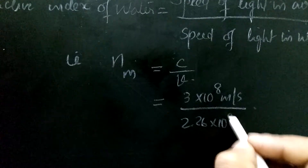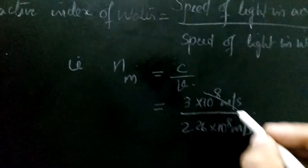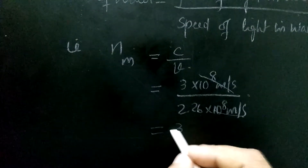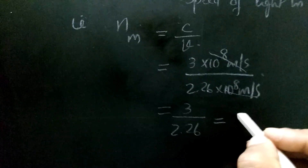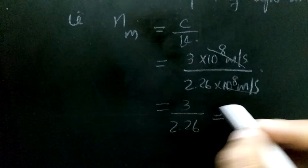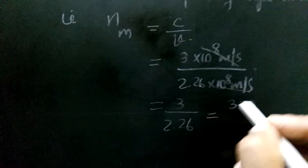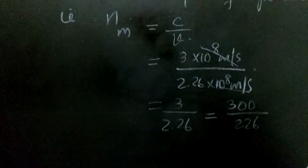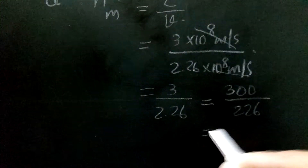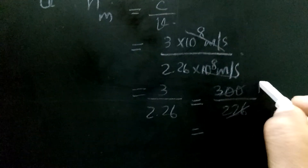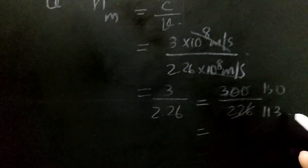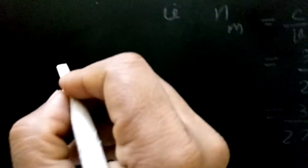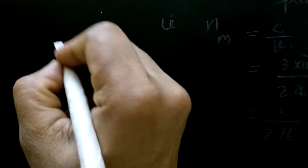So we substitute the values. The 10⁸ terms get cancelled. So you will get 3 divided by 2.26. When we multiply both numerator and denominator by 100, you get 300 divided by 226, which simplifies to 150 divided by 113.